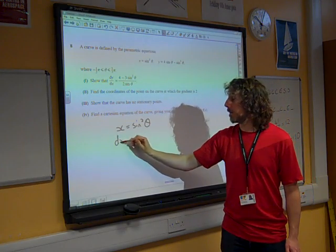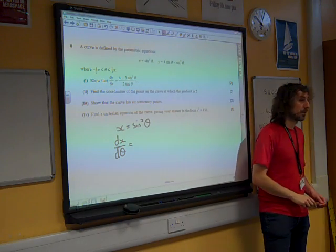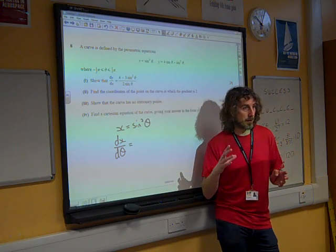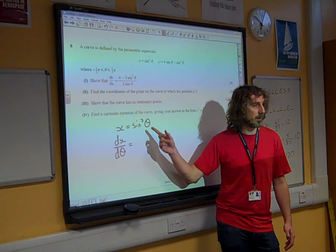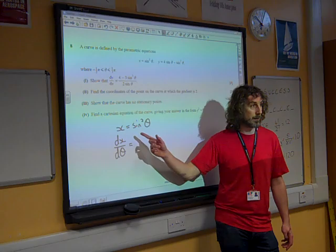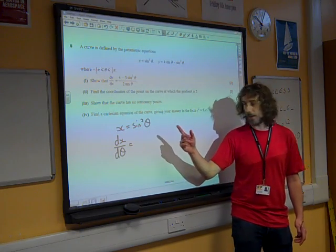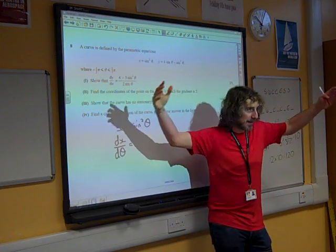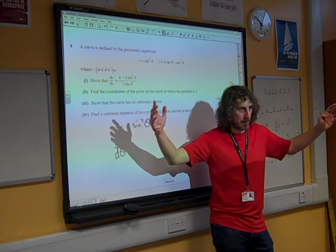So we're going to start with x is sine squared theta, and so we'll find dx by d theta. Now don't get things confused, we're going to talk about integration later on. Remember that there's an issue with integrating sine squared theta. But there's no problem with differentiating it, it's fine. So we think about it as being the chain rule, or the big function, the little function, or big bear, little bear as we sometimes talk about it.